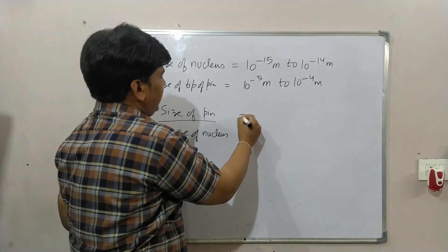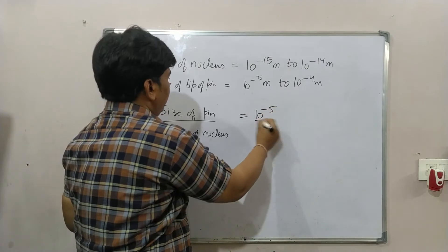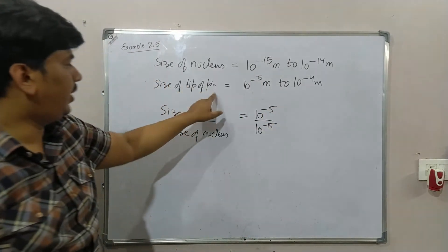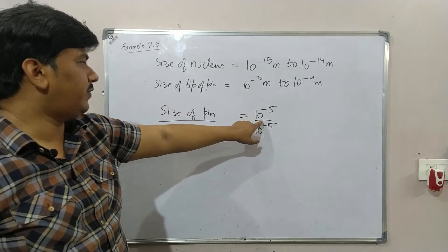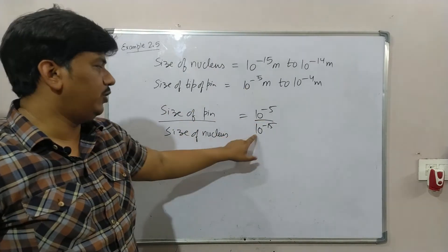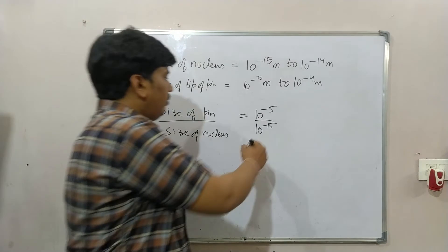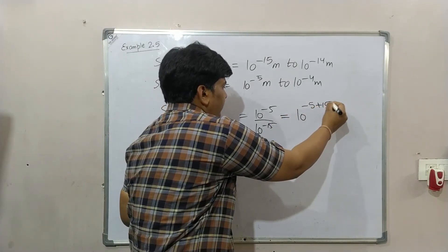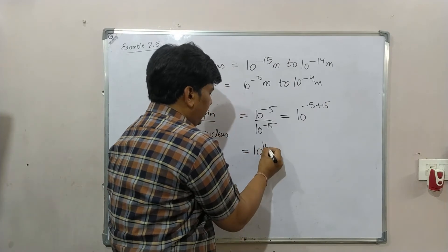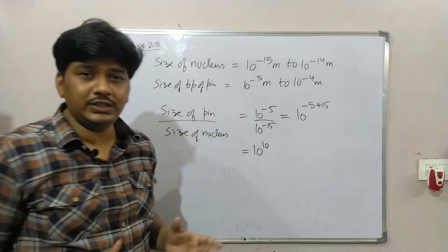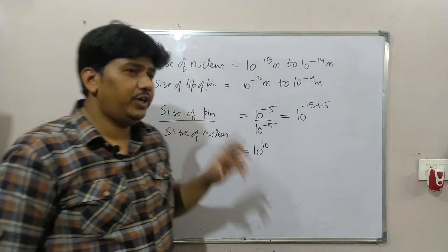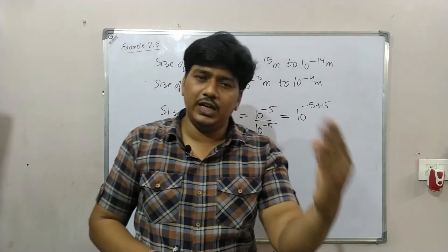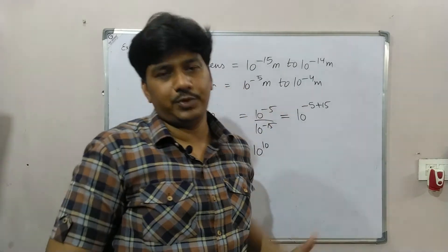Size of tip of pin divided by size of nucleus. Taking one value from each, 10 to the power minus 5 divided by 10 to the power minus 15. When we solve this, it will be 10 to the power minus 5 plus 15, that equals 10 to the power 10. This means we scaled the range up 10^10 times.